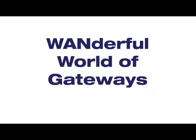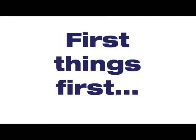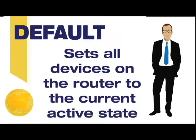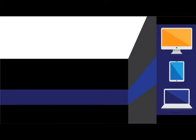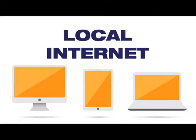Welcome to the wonderful world of gateways. First, let's go over some basic terminology. Default sets all devices on the router to the current active state. So if VPN is turned on, everything uses VPN. If VPN is turned off, everything goes out local.